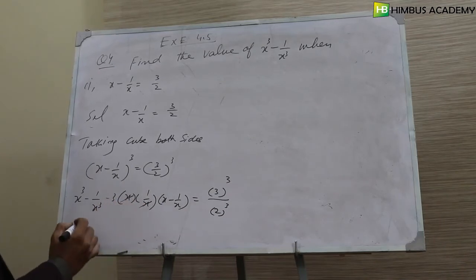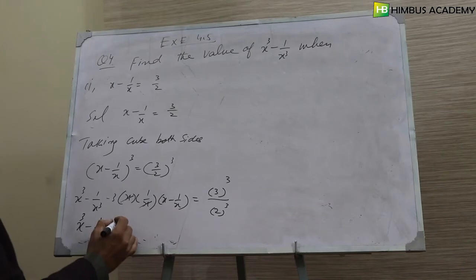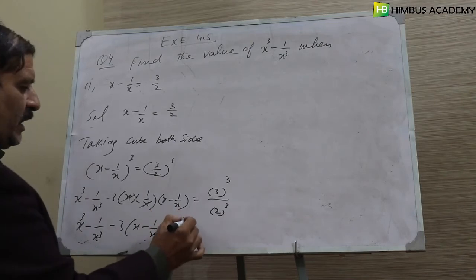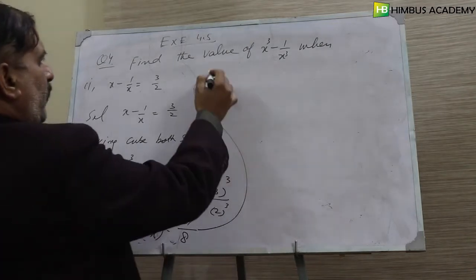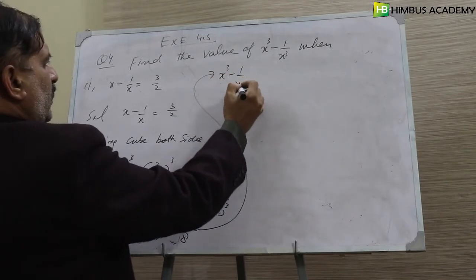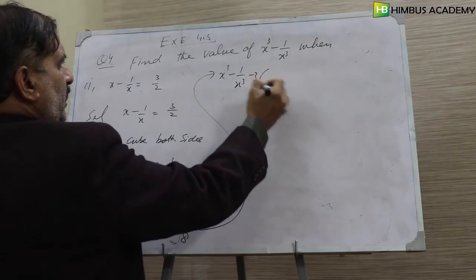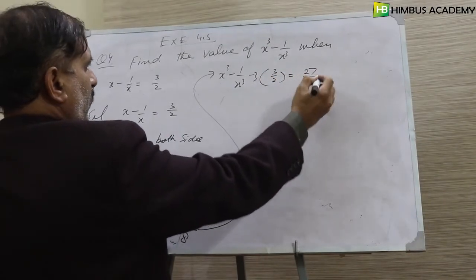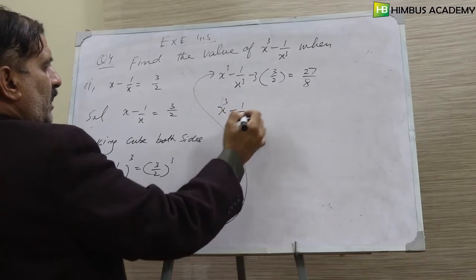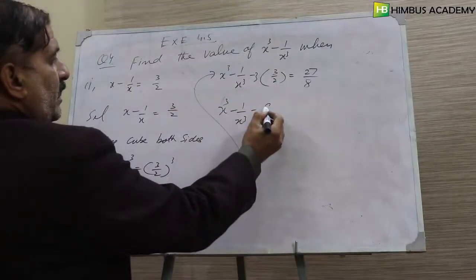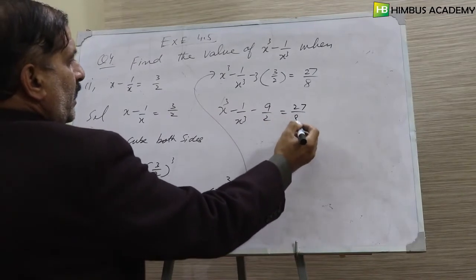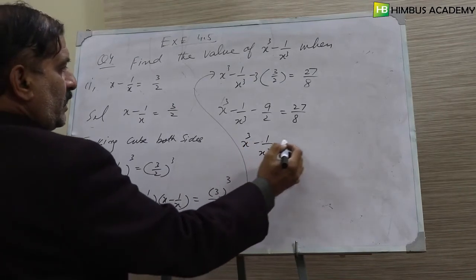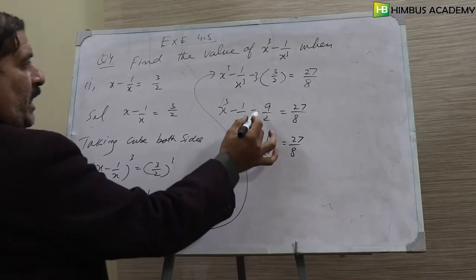x and x cancel. So x cube minus 1 over x cube minus 3 times x minus 1 over x. And 3 cube is equal to 27 and 2 cube is equal to 8. Here we put the value. So x cube minus 1 over x cube minus 3 times the value which is 3 over 2, equals 27 over 8. And x cube minus 1 over x cube is equal to 27 over 8 plus 9 over 2, giving 7 over 2.